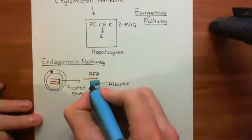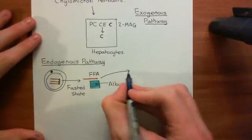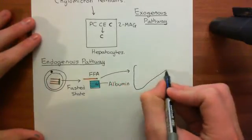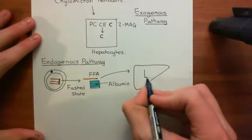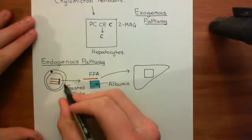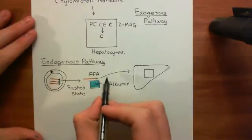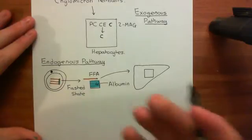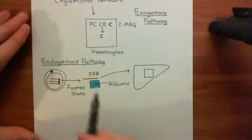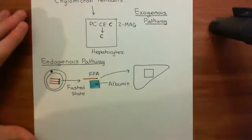The free fatty acids attached to albumin will circulate within the bloodstream and then they'll eventually be taken out by hepatocytes. Within the liver, you have hepatocytes, and what's going to happen is these hepatocytes are going to be the first cells to receive these free fatty acids that have been released by the adipocytes. The free fatty acids that go into the blood don't go directly to the peripheral tissues — they're not directly going to feed the skeletal myocytes or the cardiomyocytes. Instead, they first have to go to the liver. The liver will then package them into lipoproteins, and the lipoproteins will then go off and feed the skeletal and cardiomyocytes.